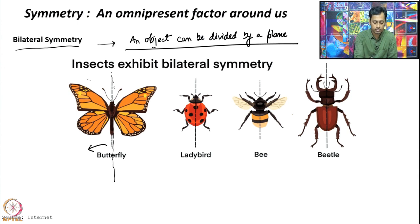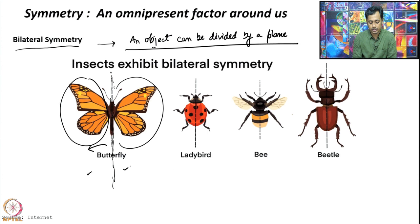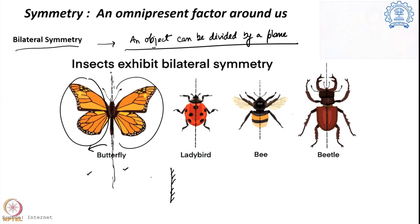On this side of the plane, whatever we see is actually mirrored on the other side — that is why we call it bilateral symmetry. There will be a plane and either side will be very similar. As we typically draw, there is a mirror image — if I draw something like the letter P, it will be mirror-imaged on the other side. Then we look at this ladybird.